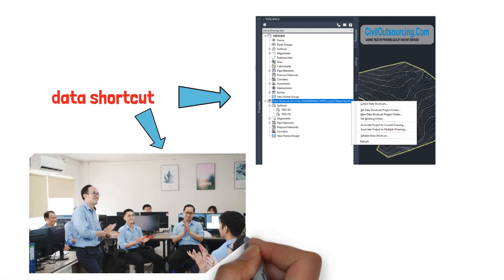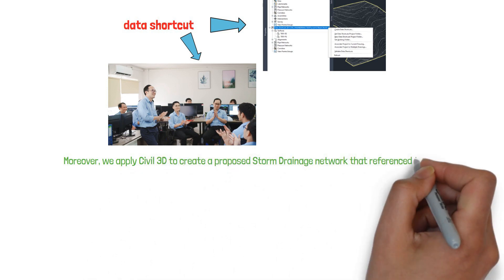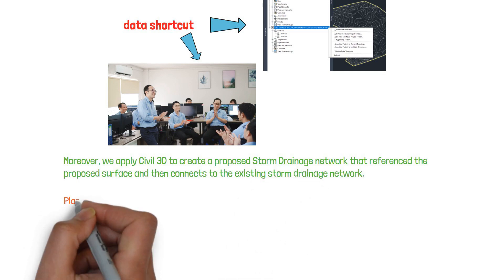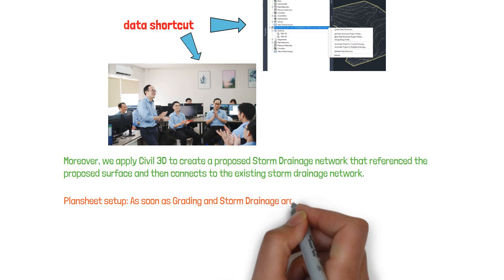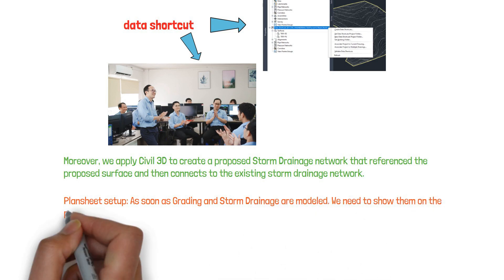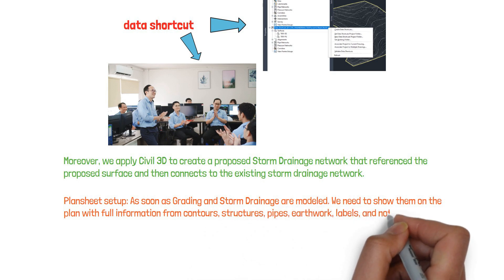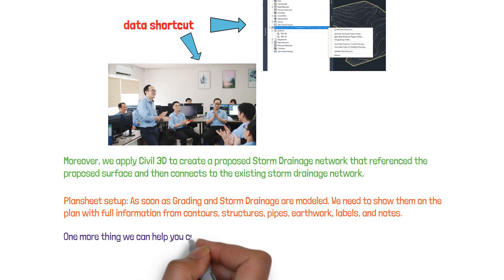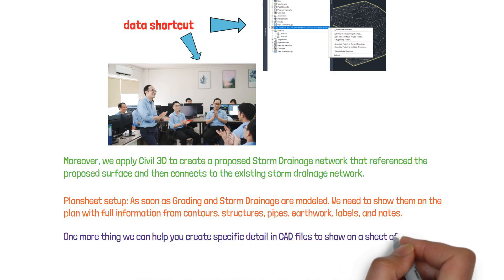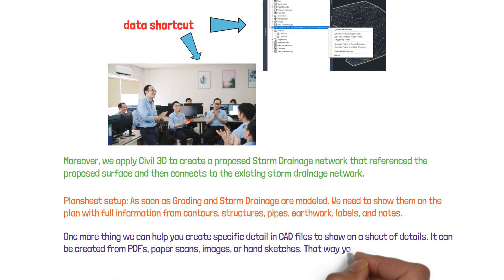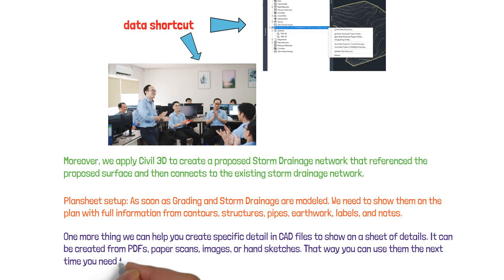This approach helps us work effectively and promotes teamwork. Moreover, we apply Civil 3D to create a proposed storm drainage network that references the proposed surface and then connects to the existing storm drainage network. Once grading and storm drainage are modeled, we show them on the plan with full information including contours, structures, pipes, earthwork labels, and notes. We can also help you create specific details in CAD files from PDFs, paper scans, images, or hand sketches — so you can reuse them and build a template bank.